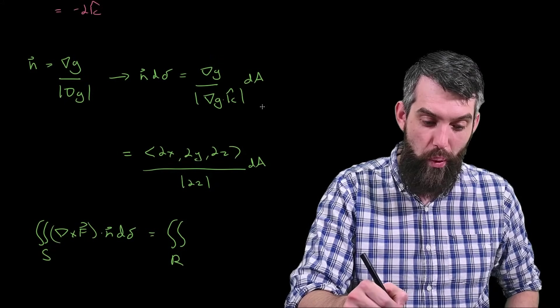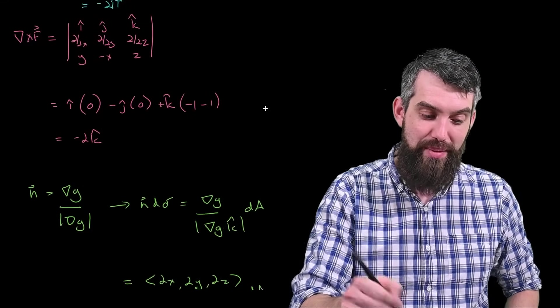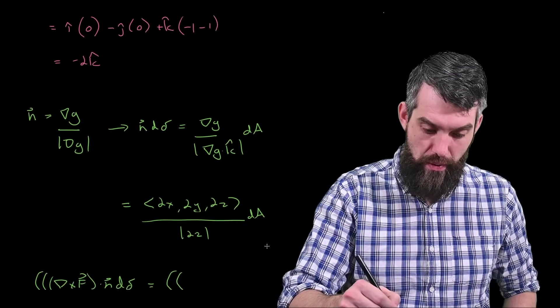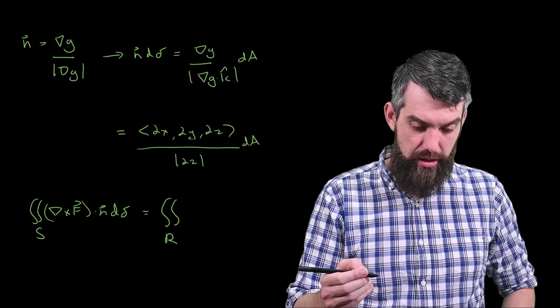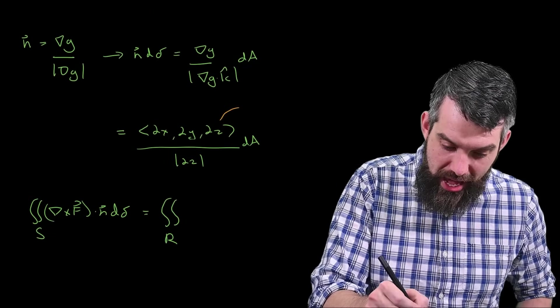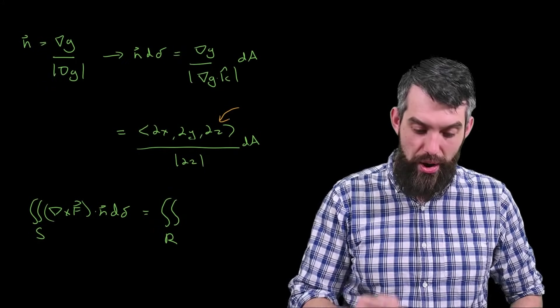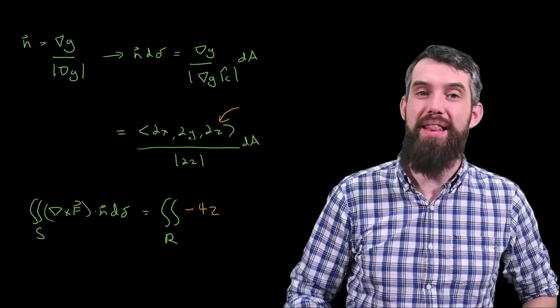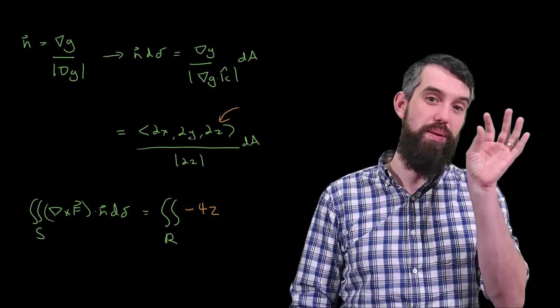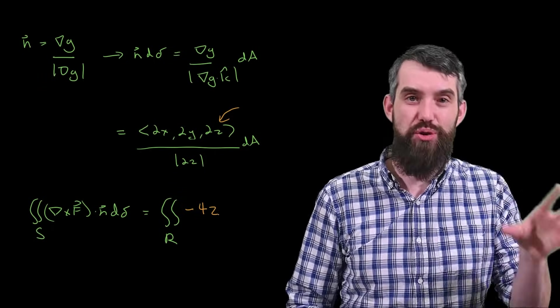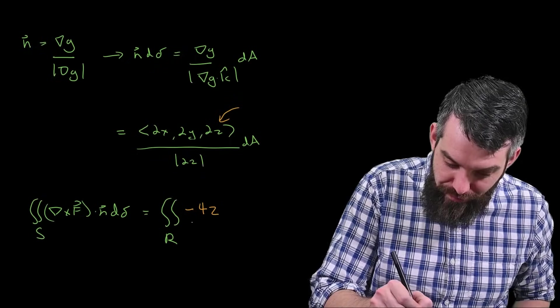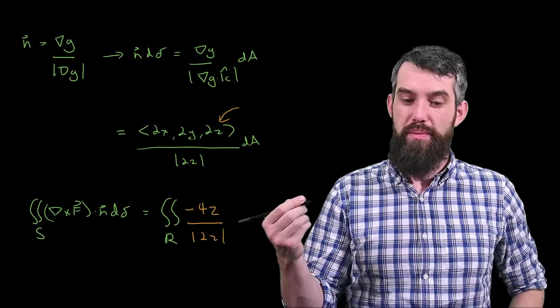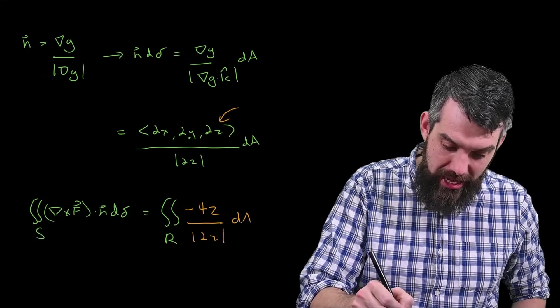Then I need to execute the dot product between the curl and this expression that I just had. So I need to remind myself what my curl was. So if I go up a little bit, I'll remind myself that my curl was minus 2 in the k-hat. Alright, so then here the only k-hat component is the 2z, so what do I have? I have a minus 4z, that's the dot product between the minus 2 in the k-hat, and this 2x, 2y, 2z, all divided by the length of 2z, multiplied by d-a.